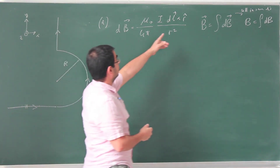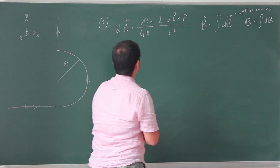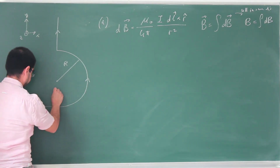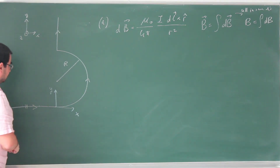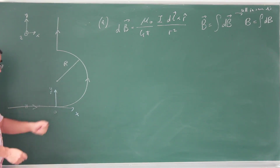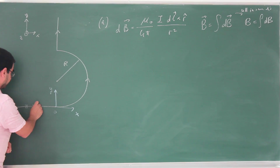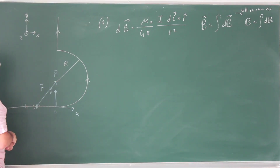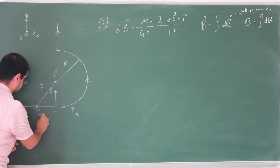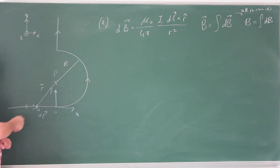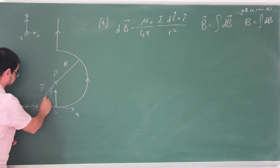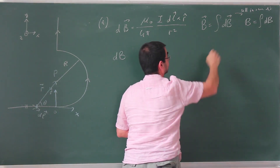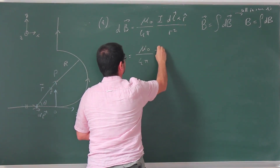Now, how do we calculate dB? dB is the magnitude of that expression, so we need to write expressions for R and dL. It's convenient to put the origin of our coordinate system at the center point here. The wire is coming from minus infinity to 0. Looking at a little part: this is my vector R pointing to point P, and this is my vector dL, a small vector along the wire. I need to calculate the cross product. Let's call theta the angle between R and dL.